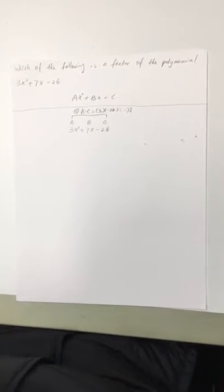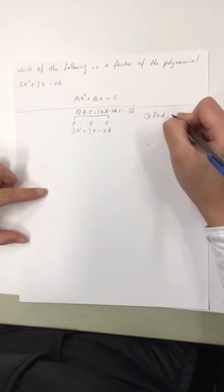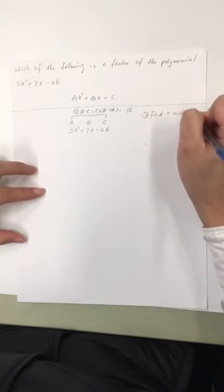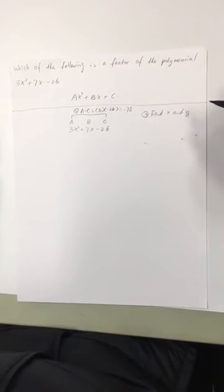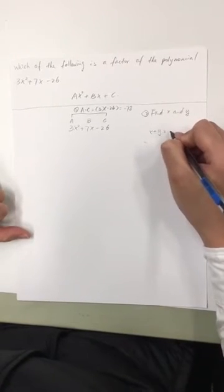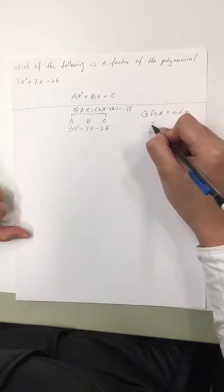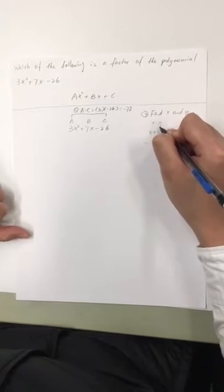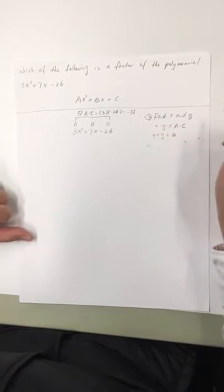Second, we try to find two numbers, x and y. Their sum should equal to b, and their product should equal to the product of a and c.